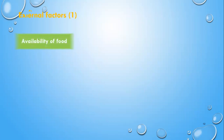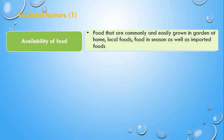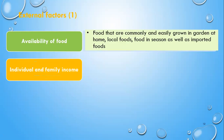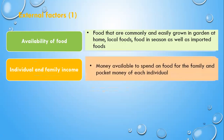External factors include the availability of food — that is food that is commonly and easily grown in the garden at home, local foods, food in season, as well as imported foods. Secondly, individual and family income: that is money available to spend on food for the family and pocket money of each individual.